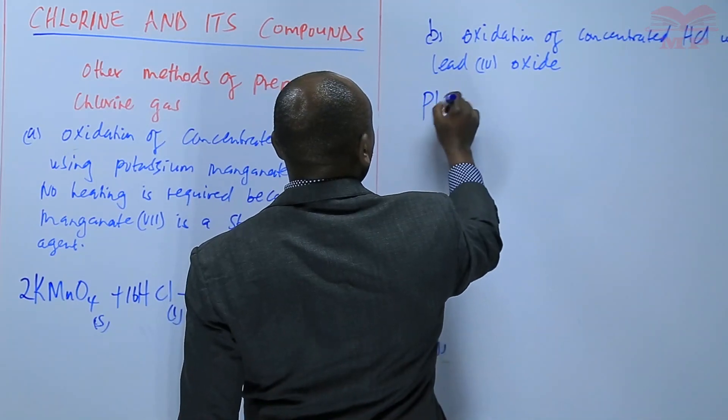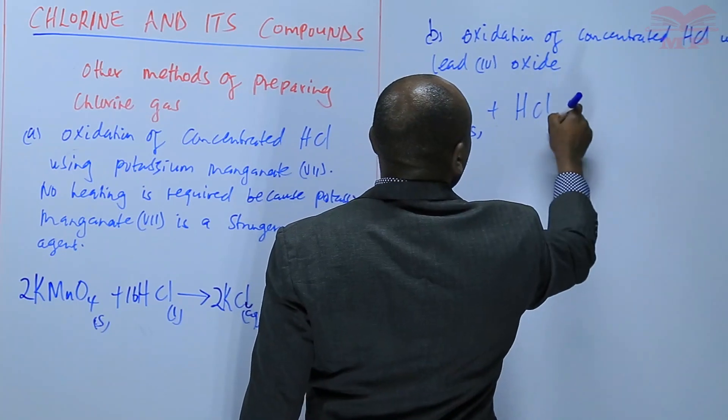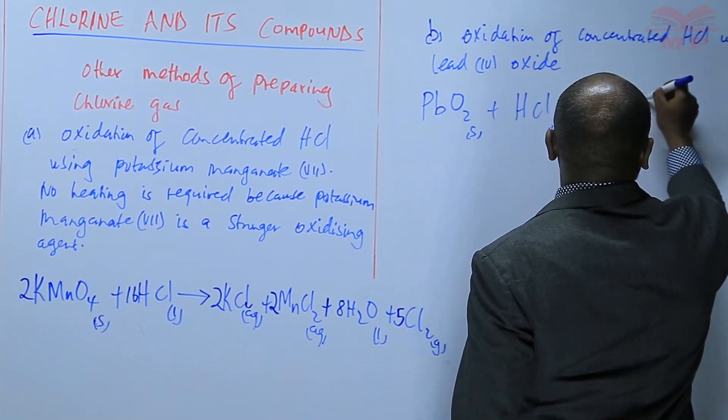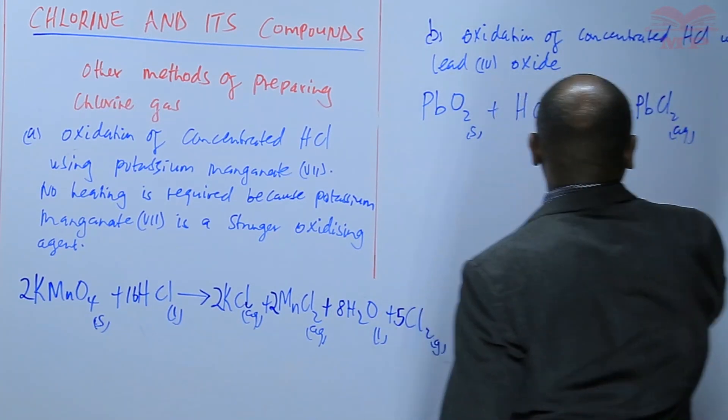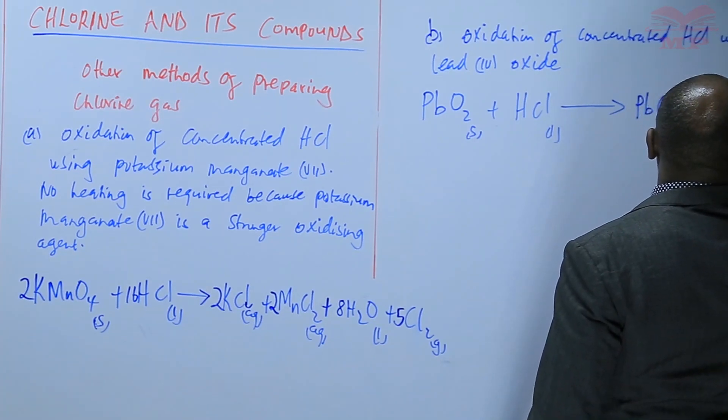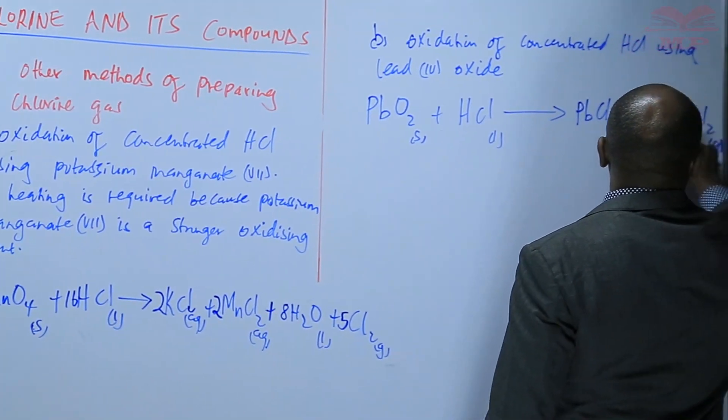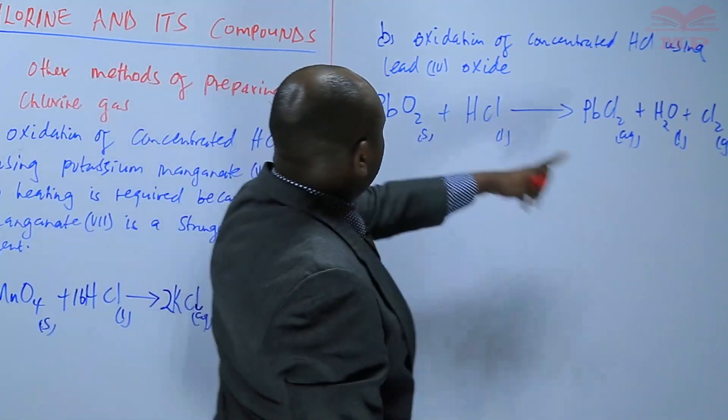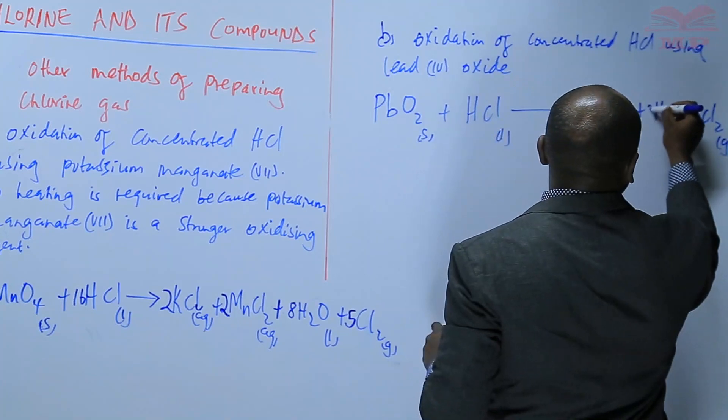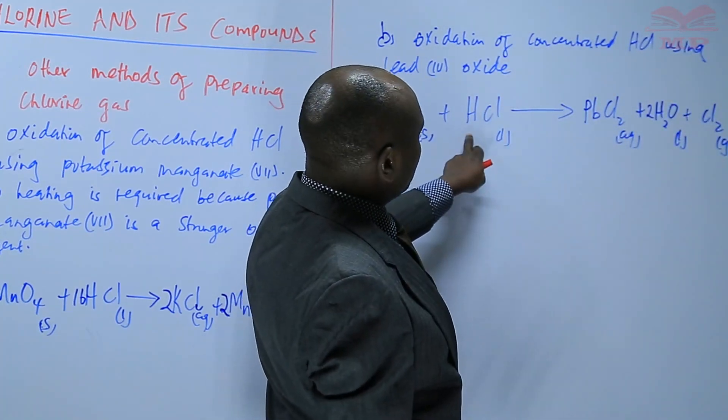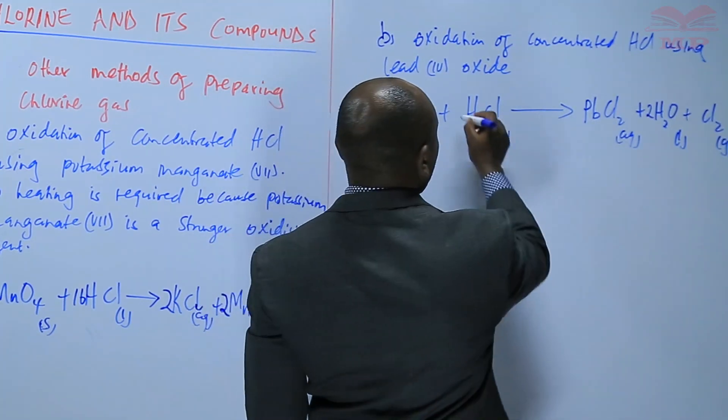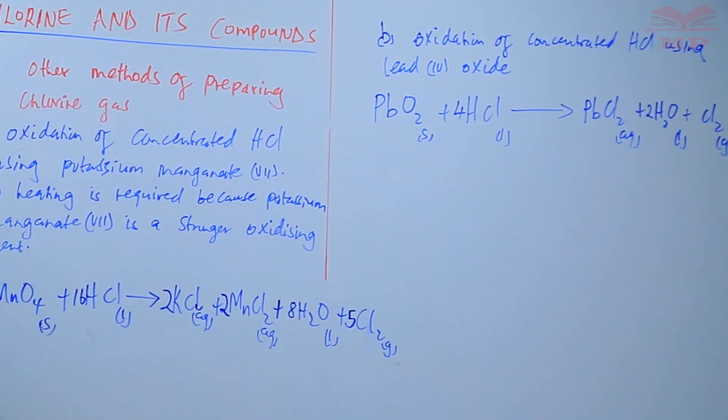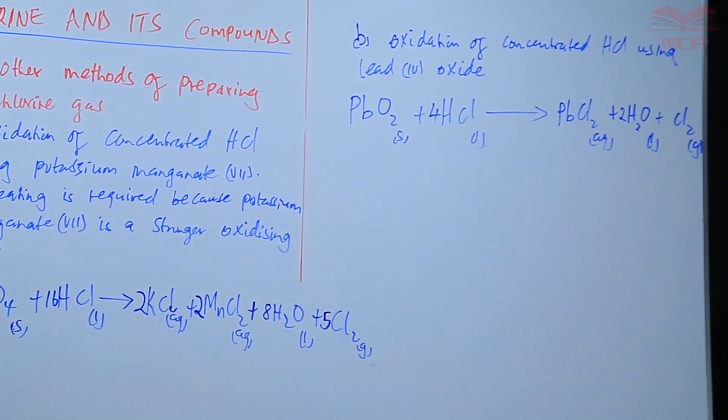And this one is PbO2 plus concentrated hydrochloric acid. And here we have PbCl2 plus water plus chlorine gas. Also to ensure it's balanced, lead is balanced, oxygen not balanced, there should be two here. Hydrogen they are four, so also here they should be four. Chlorine, they are two plus two, that is four. So that equation is balanced. Basically, those are two other methods that can be used to prepare chlorine gas.